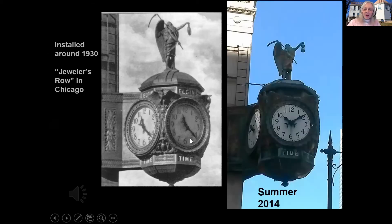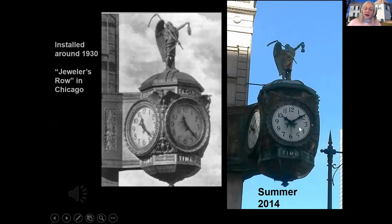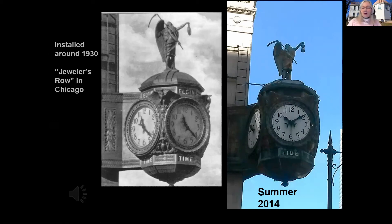I went downtown a few years ago and found that clock — at Wacker and Wabash somewhere. The clock time was correct, but you might notice they took the Elgin watch out of Father Time's hand and put the hourglass back in, and they scratched off 'Elgin Time' on all four sides — it just says 'Time' now. But at one time they were sending the time signal from our observatory on the utility lines directly to their offices, and they very often were asked what the time was, so they put it right outside where everyone could see that brand recognition of Elgin Time.